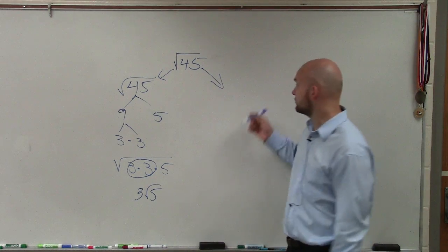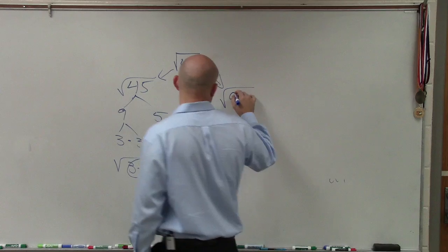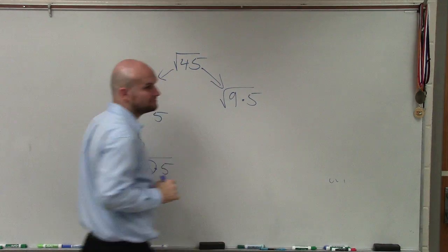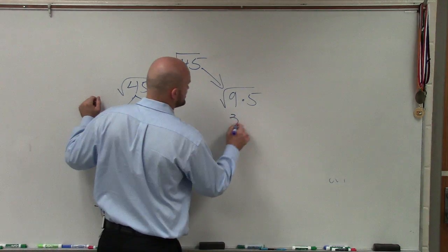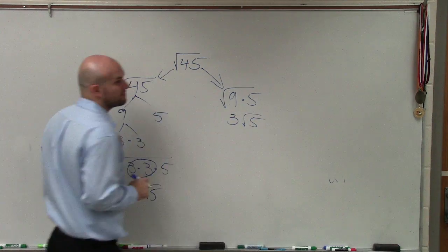Yeah, we know 9 divides into 45. So I rewrite this as 9 times 5. Then I can simply take the square root of 9, which is 3, square root of 5. And I'm done.